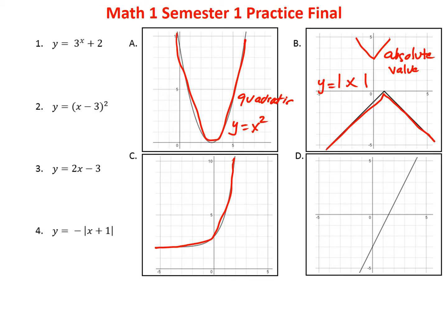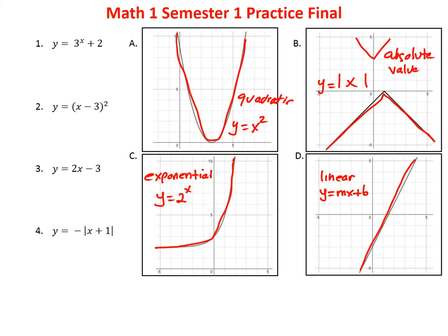Graph C has a function that is constantly increasing — you also see them decreasing. This is called the exponential function, designated because the x is actually in the exponent. The last one is simply a straight line called the linear equation. You'll recognize it often in the form of mx plus b. The key thing is that the x term doesn't have any exponents of any kind.